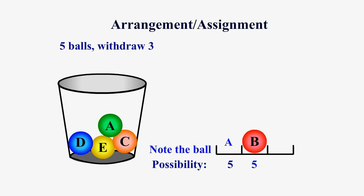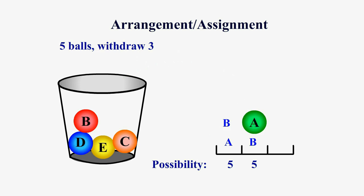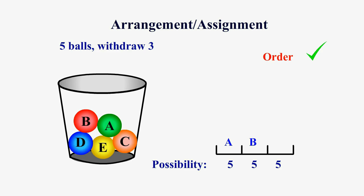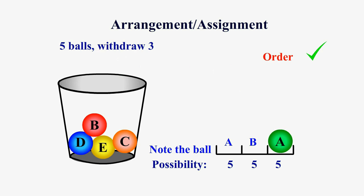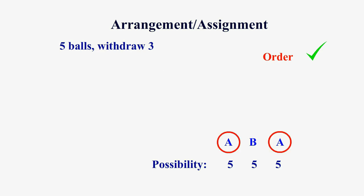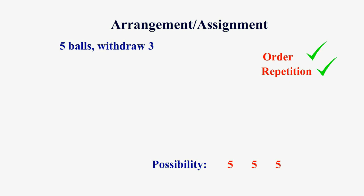Suppose that the second ball is ball B. Note that this order is different than if we had taken the first ball as B and the second ball as A. So in this case, order is important. For the third ball, because there are again five balls in the basket, the possibility is five again. Suppose that the third ball is A — this is possible because ball A is back in the basket. So the sequence of withdrawal is A, B, A. We see that the same ball can be taken more than once, so in this case, repetition is allowed. In this type of counting, order is important and repetition is okay.